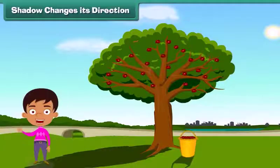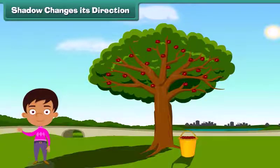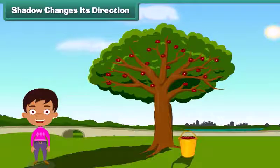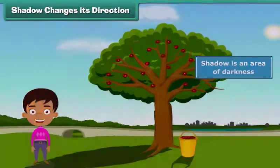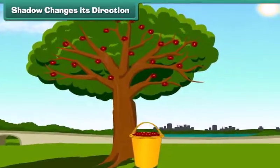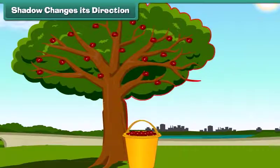Hi friends. At first, let's discuss what a shadow is. Actually, a shadow is an area of darkness which is formed when the light is blocked by an object.